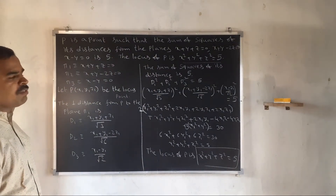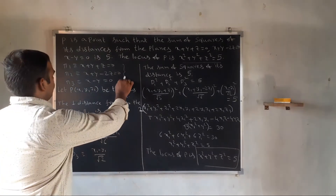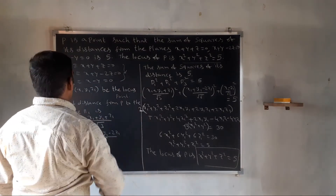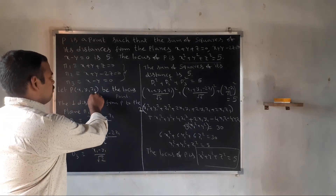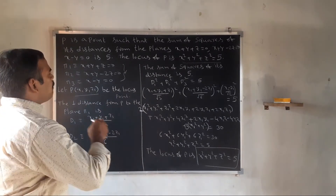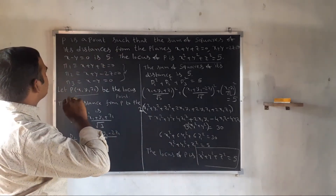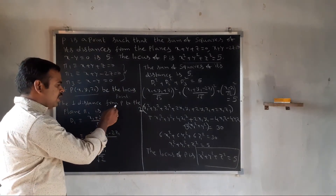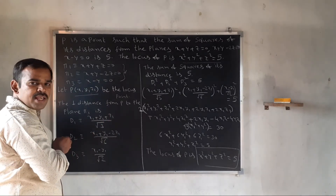Solution. Given plane equations: P1 is x plus y plus z equal to 0, P2 is x plus y minus 2z equal to 0, P3 is x minus y equal to 0. P is a point; let P be x1, y1, z1 as the locus point. The perpendicular distance from P to each plane uses the formula ax1 plus by1 plus cz1 plus d divided by square root of a square plus b square plus c square.